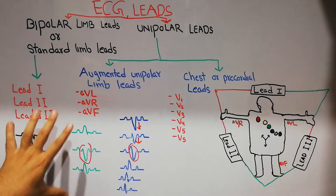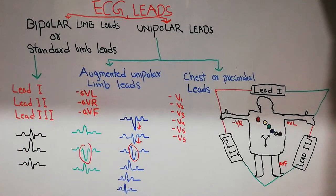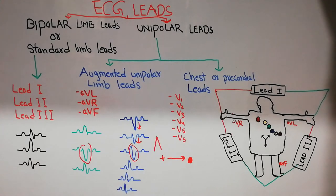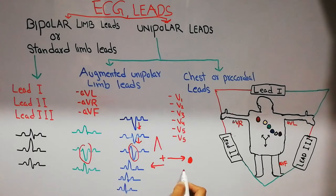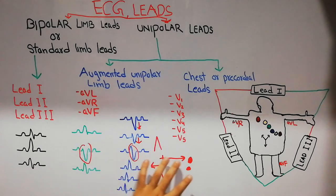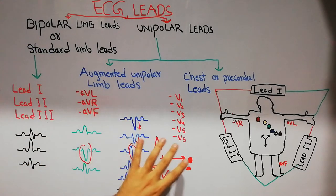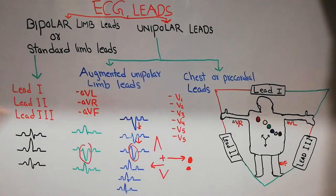Positive and negative deflections are obtained depending on the direction of electric current relative to the electrode. If the positive current is moving towards the electrode, the deflection will be positive — whether it is depolarization or repolarization. If the positive current is moving away from the electrode, it will be recorded as a negative deflection. Any positive movement toward the electrode is positive; any movement away is negative.